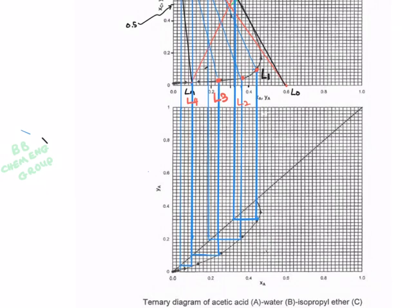Now we can draw the tie lines. The first stage, the first tie line, is formed between L1 to V1. Next tie line is from V2 to L2. The third one is from V3 to L3, and the last one is from V4 to L4.